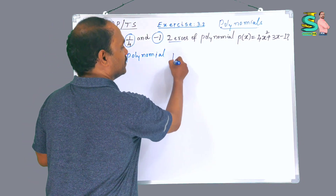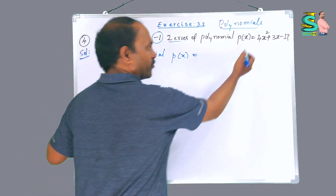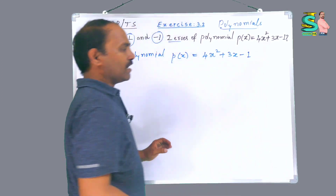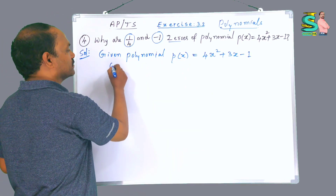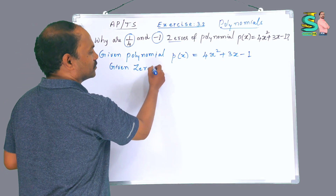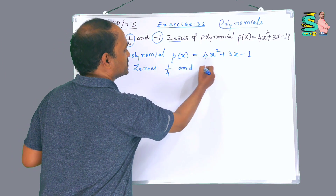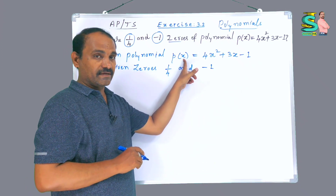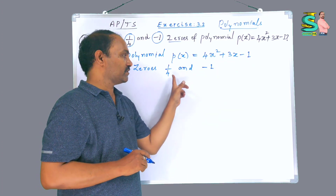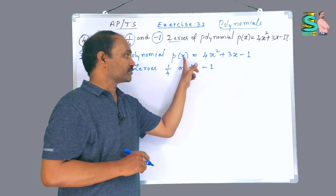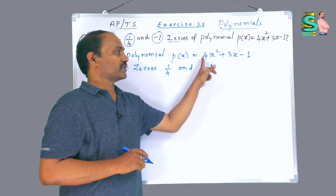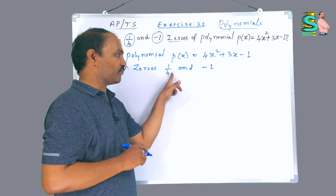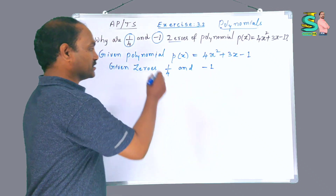The given polynomial p(x) is equal to 4x² + 3x - 1. Given zeros are 1/4 and -1. How to prove these two are the zeros? If we substitute x = 1/4 and the value is 0, then 1/4 is a zero of this polynomial. Similarly, if we substitute x = -1 and the value becomes 0, then -1 is also a zero. So we are going to prove p(1/4) = 0 and p(-1) = 0.